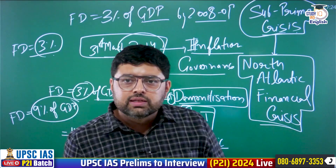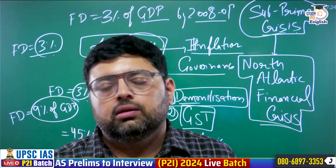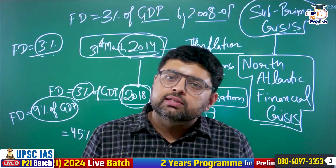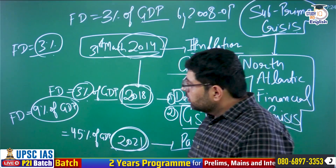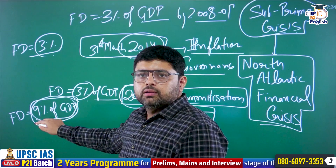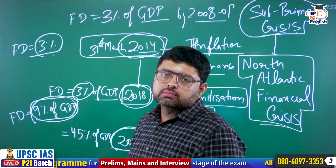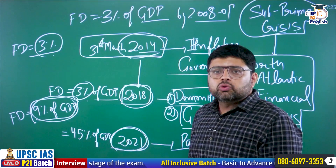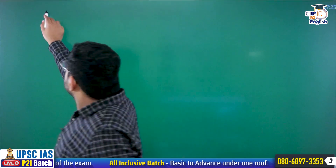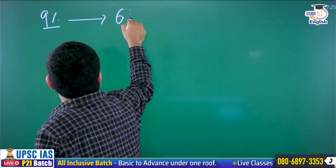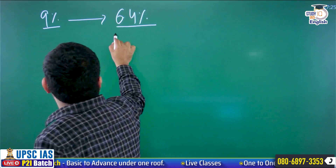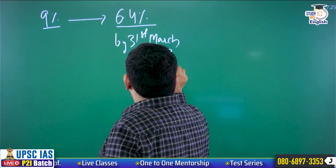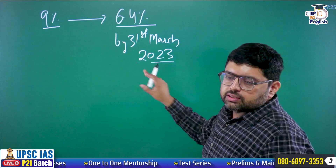This gap between receipts and expenditure is what we call fiscal deficit, or borrowing. The government takes borrowing from someone to fill this gap, and that loan has to be repaid. Ultimately, it puts pressure on the future government and future generations, who have to pay more tax to repay this borrowing. This creates a burden on the Consolidated Fund of India, and this burden should not be there — so we came out with the concept of the FRBM Act in 2003.